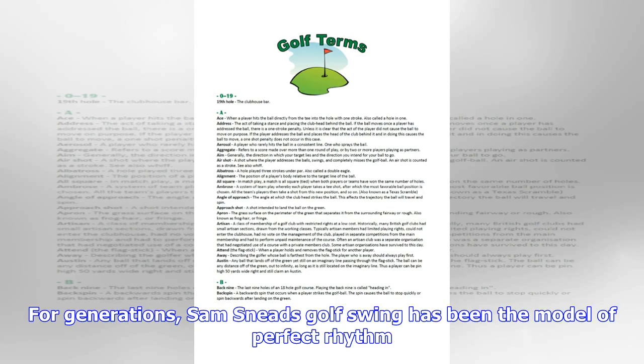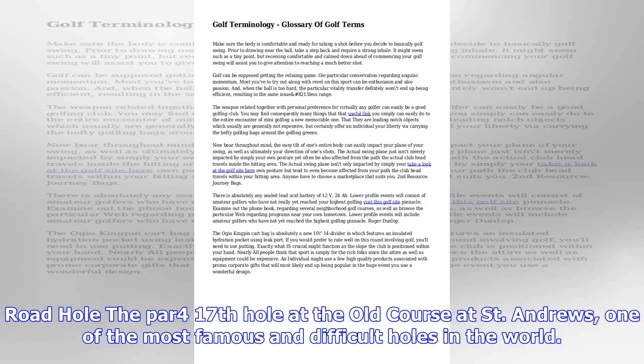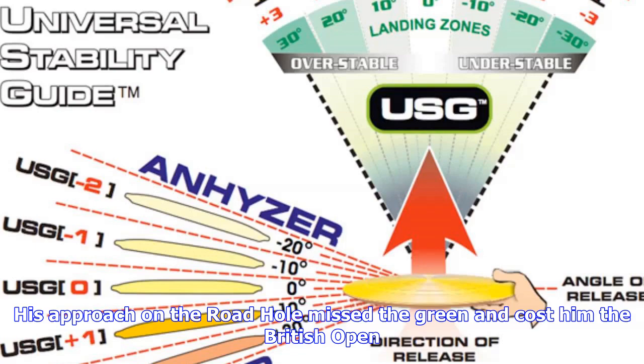Over club: to pick the wrong club, usually for an approach shot, causing the ball to go over the green. He over-clubbed his approach to the 18th green, and his ball came to rest in a shrub.